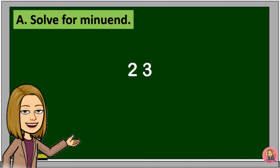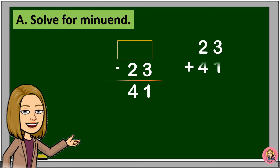Here's another example. Again, to solve for the minuend, we will add 23 and 41. 3 plus 1 is equal to 4. 2 plus 4 is equal to 6. So, the minuend is 64. If we subtract 23 from 64, the difference is 41.